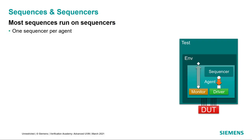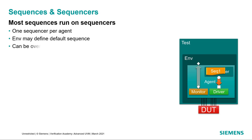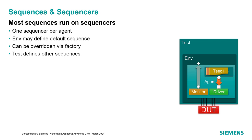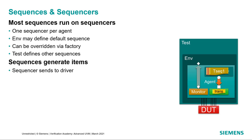In UVM, most sequences are run on sequencers. There's typically one sequencer per agent. The environment may define a default sequence to run on that sequencer, and when you do that, the sequence can be overridden via the factory, which is typically done from the test. The test can also define other sequences to run on that sequencer, and those sequences will run in parallel. The driver will get a transaction from one or the other as the test proceeds. The sequences generate those sequence items, send them to the driver, and the driver then sends them to the bus.